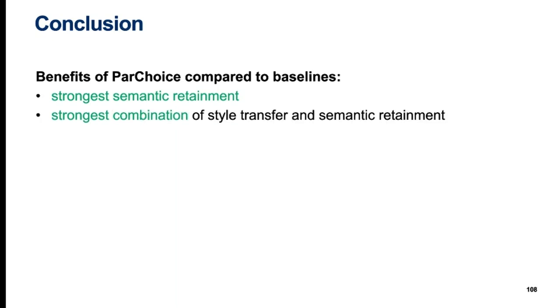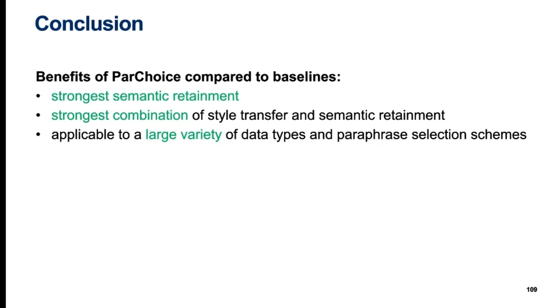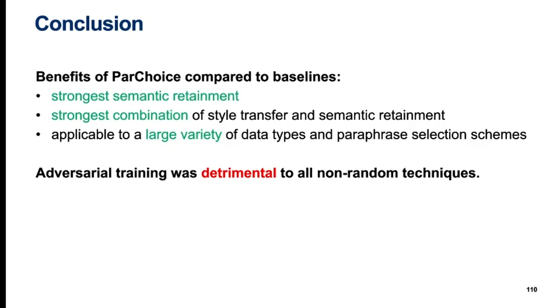We summarize our main claims as follows. We were able to improve baseline performance in multiple respects. First, we always achieved the highest semantic retainment results compared to all baselines across all datasets and all test settings. Secondly, the combined effect of style transfer and semantic retainment was overall highest with ParChoice. Finally, the overall success of ParChoice indicates that our paraphrase generation was able to produce a large variety of paraphrases usable for many different tasks and across different data types. However, a problem for both the baselines and ParChoice was adversarial training as a countermeasure. An open question for future research is combining strong semantic retainment and good style transfer performance with resistance to adversarial training. Our results suggest that it might be beneficial to increase the randomness of the style transfer process.